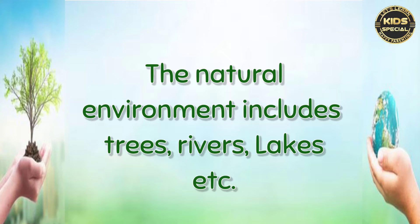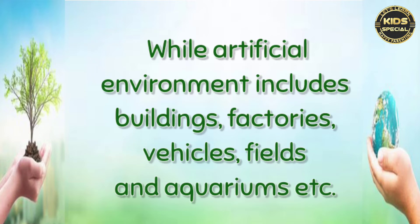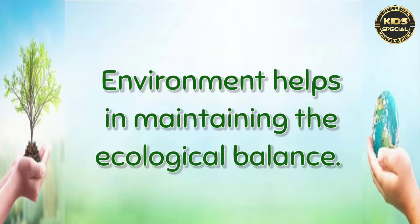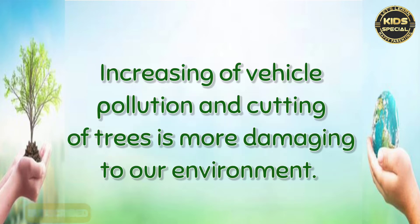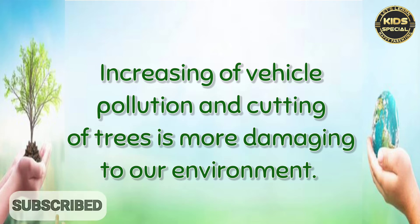The natural environment includes trees, rivers, lakes, etc., while artificial environment includes buildings, factories, vehicles, fields and aquariums, etc. Environment helps in maintaining the ecological balance. We humans, in the search of progress, have forgotten its value.